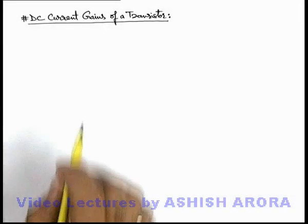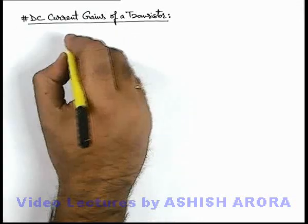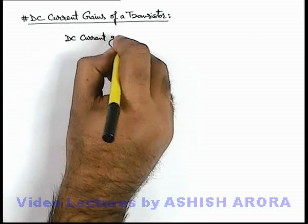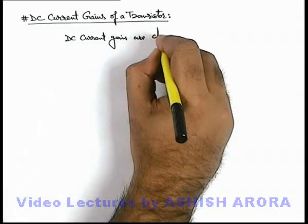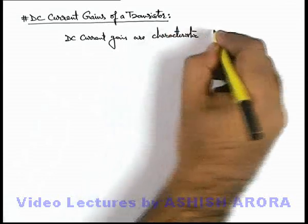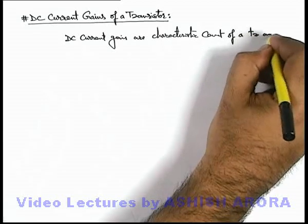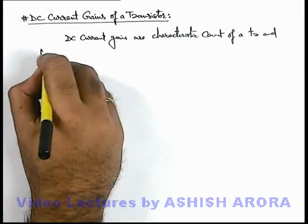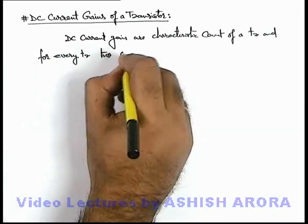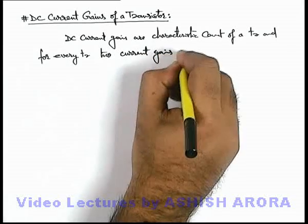Students, let's now study DC current gains of a transistor. DC current gains are characteristic constants of a transistor, and for every transistor two current gains are defined.